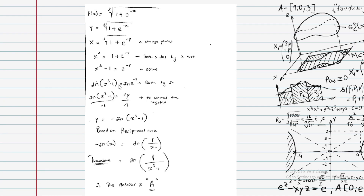Taking ln of both sides and simplifying: y equals minus ln(x cubed minus 1). Using the log property that minus ln x equals ln(1 over x), we get y equals ln in the bracket 1 over (x cubed minus 1).